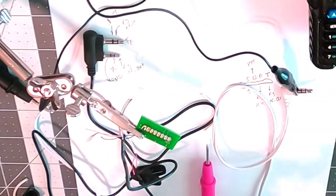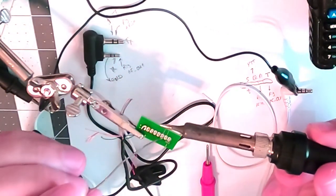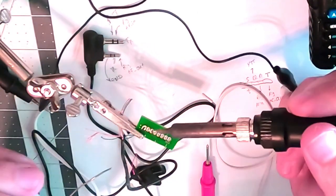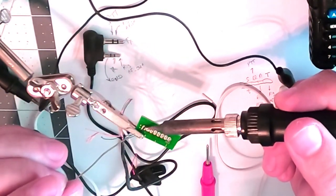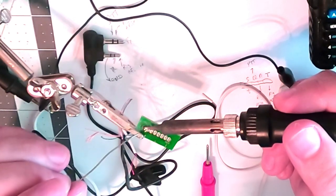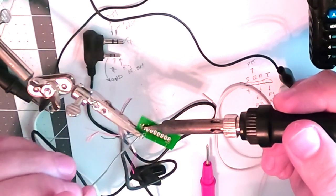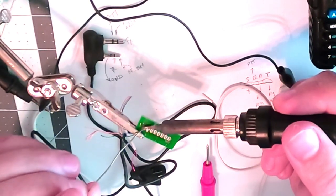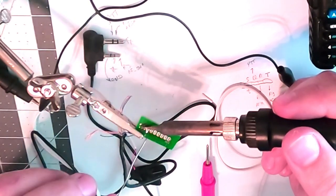We're going to tin the tip so that we can get good heat transfer. We're going to hold that onto the pad and the wires and let it sizzle for just a minute. And then we're going to apply flux core solder.